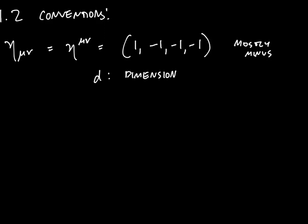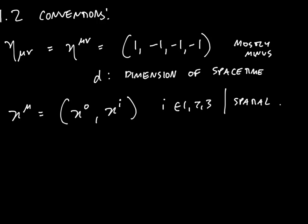D is gonna be the dimension of space-time, mostly four. When I discuss four vectors I will write them like this: X mu has a time component and a spatial component so i here runs over one two and three and is the spatial component. And finally I'm always going to set h bar equals to C equals to one. If we need them they can be restored from dimensional analysis, there's no loss of generality there.